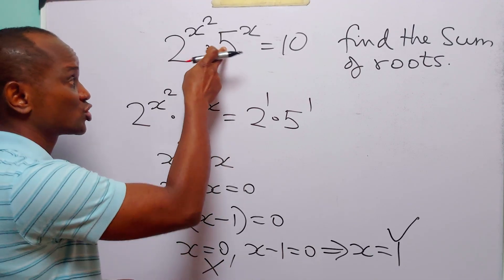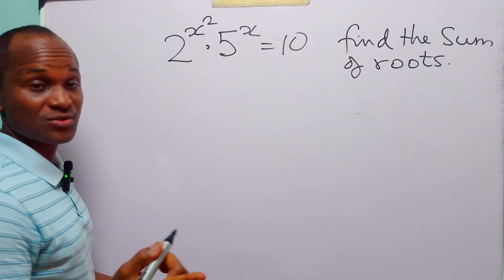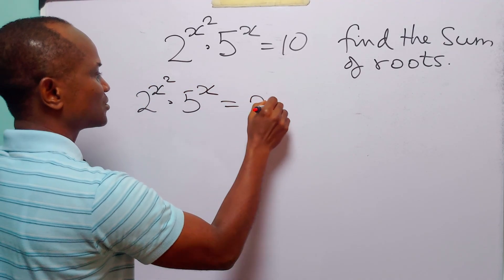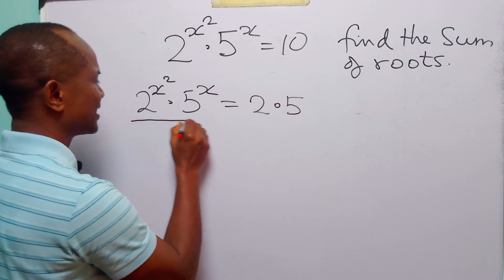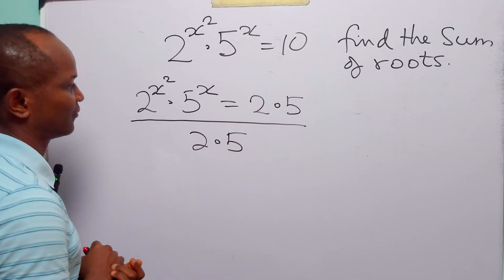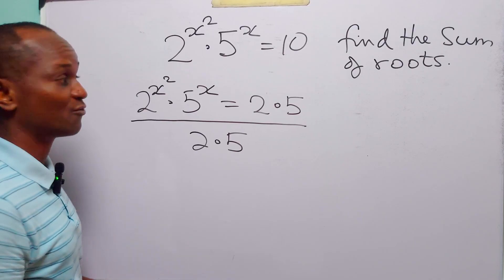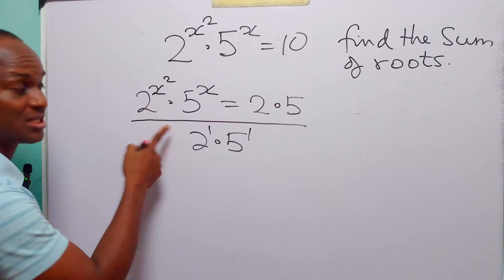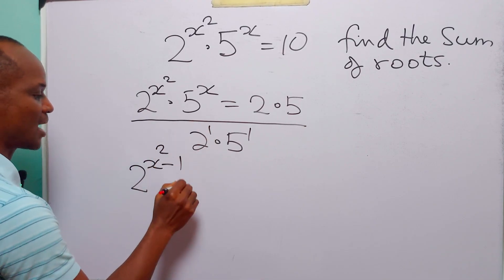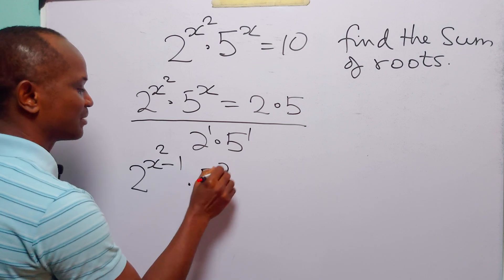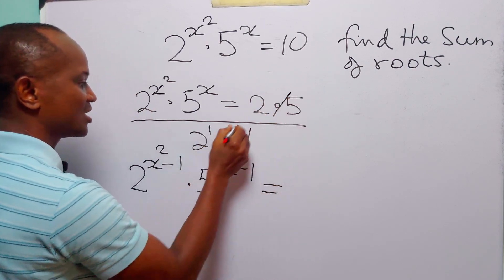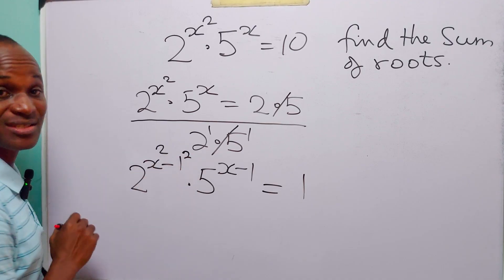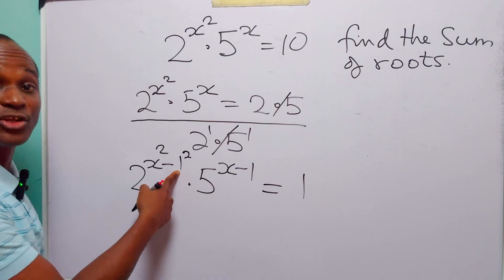The correct way to solve such equations is this. We start by noting that 2 to the power x squared multiplied by 5 to the power x is equal to 2 times 5. In this case, we are going to divide through this equation by 2 times 5. Remember that when two numbers with the same base divide, we simply subtract their powers. Here we have the power 1 on each side. So on the left-hand side of this equation, we have 2 to the power x squared minus 1 multiplied by 5 to the power x minus 1, and on the right-hand side this gives us 1. Notice that here we can write 1 as 1 squared, and you are going to see the difference of two squares.